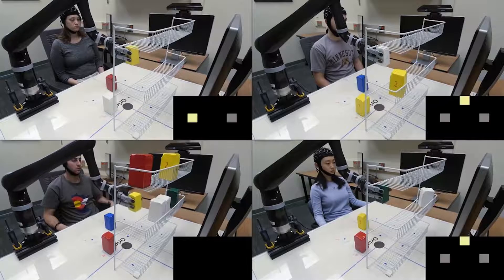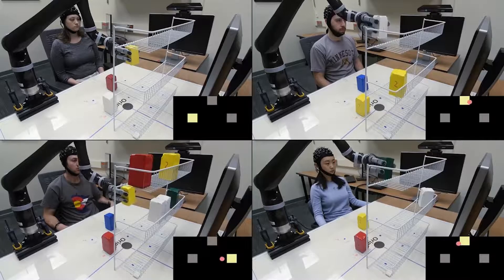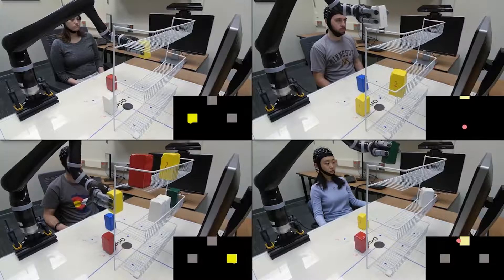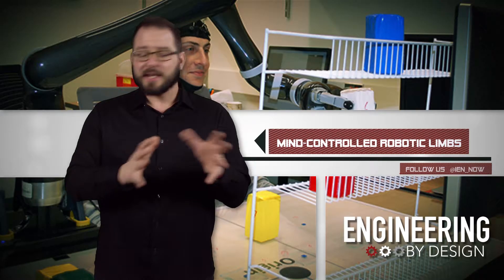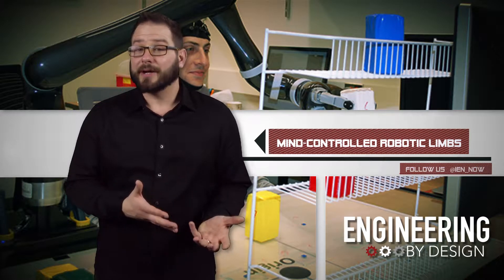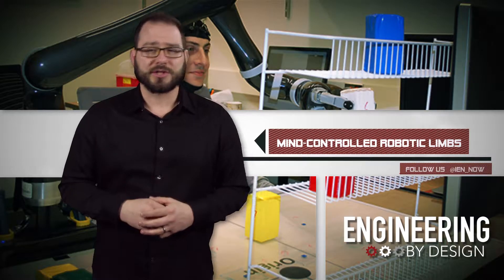According to researchers, this is the first time in the world that people have operated a robotic arm to reach and grasp objects in a complex 3D environment using only their thoughts. That means they didn't have an implant. The research could help millions of people who are paralyzed or have neurodegenerative diseases.